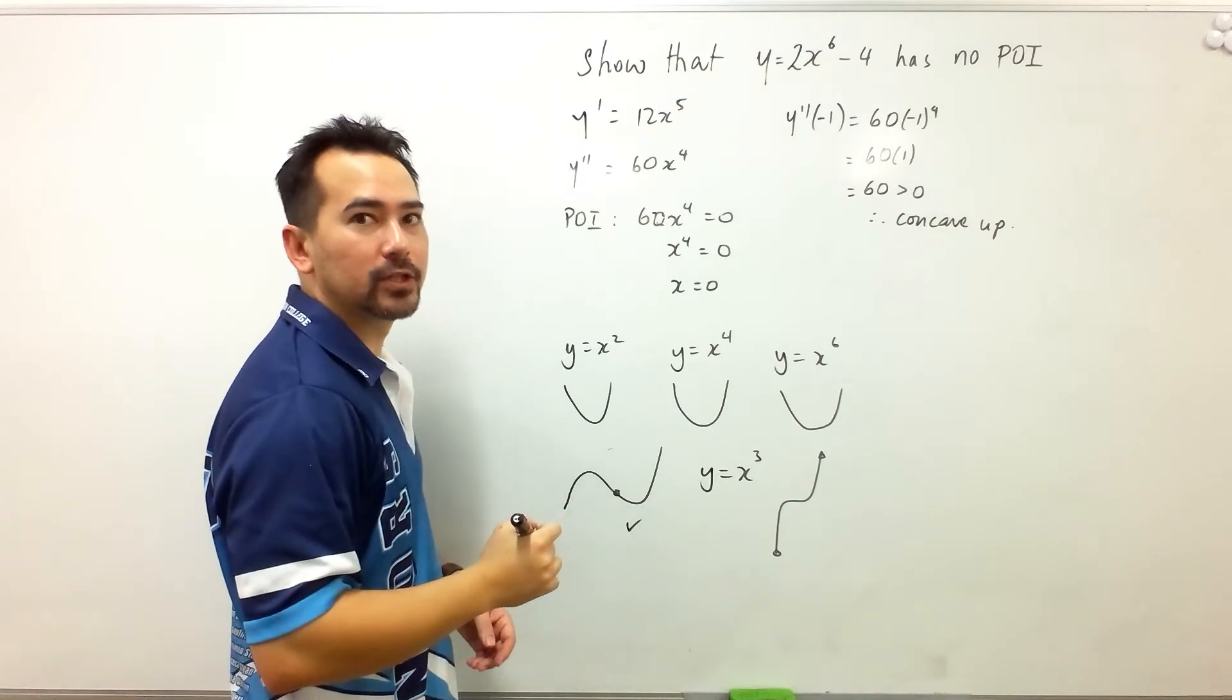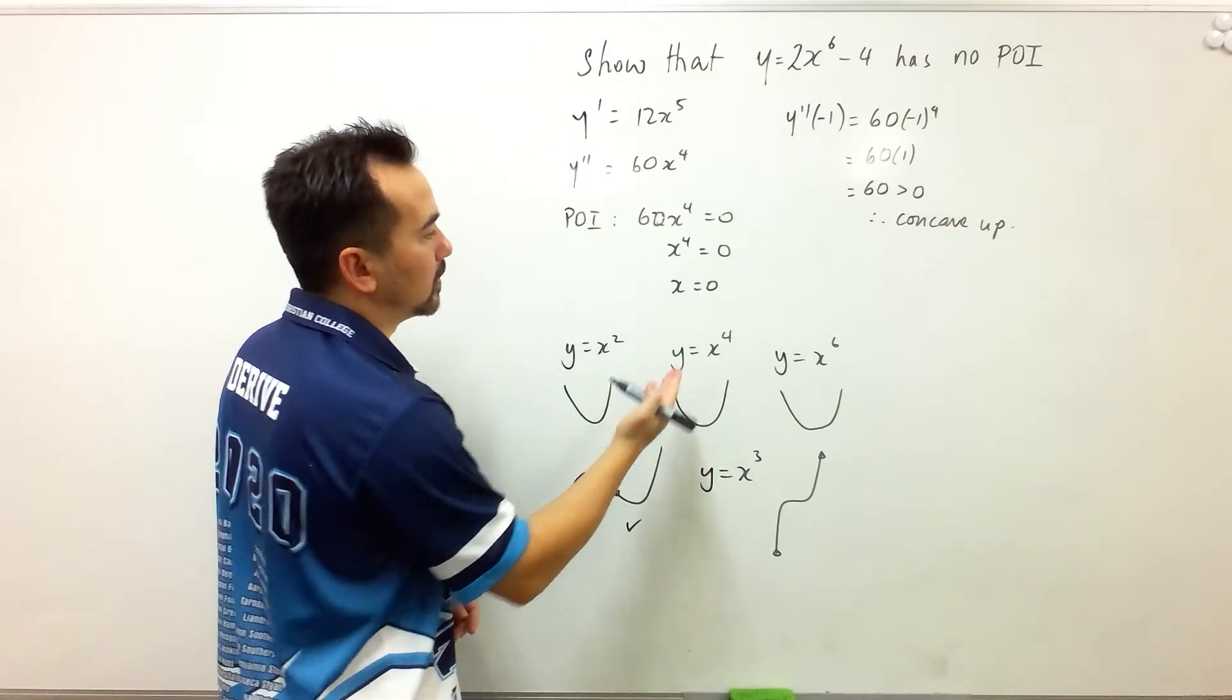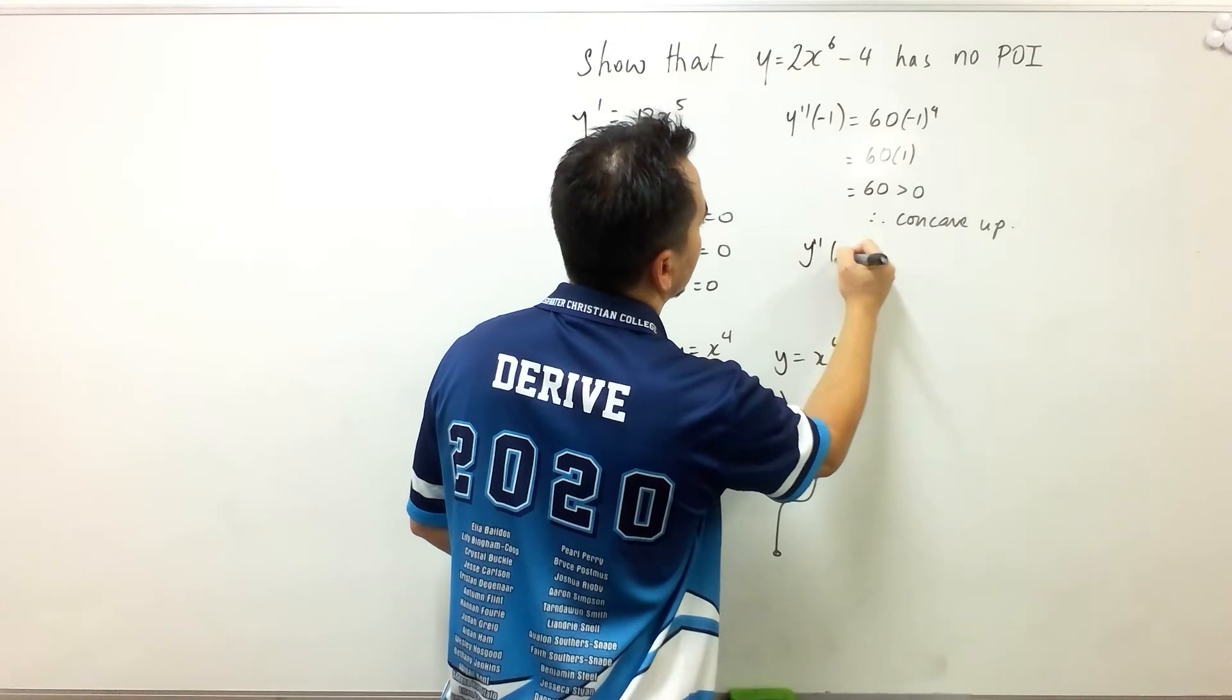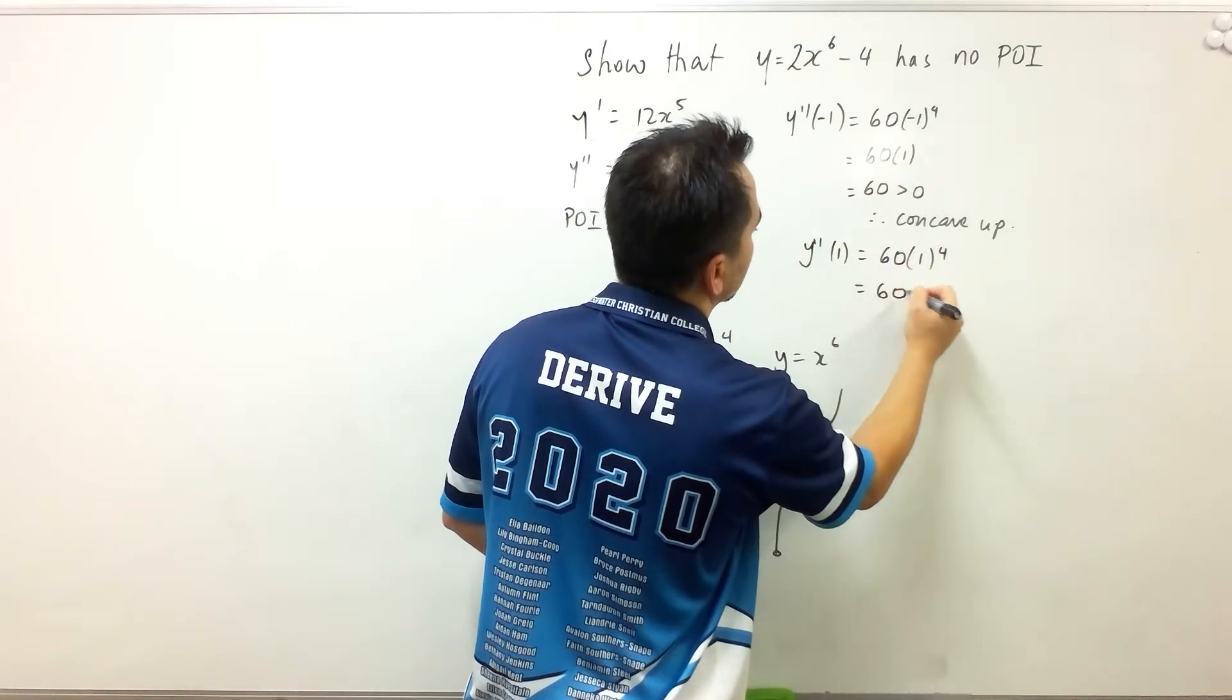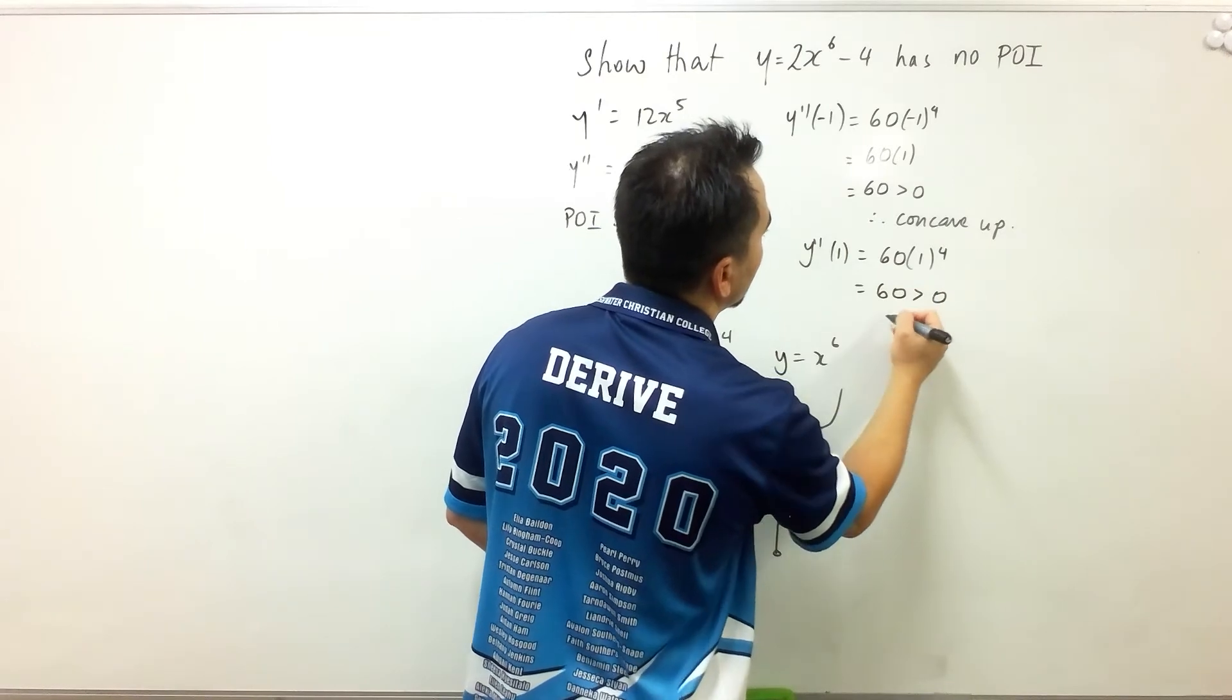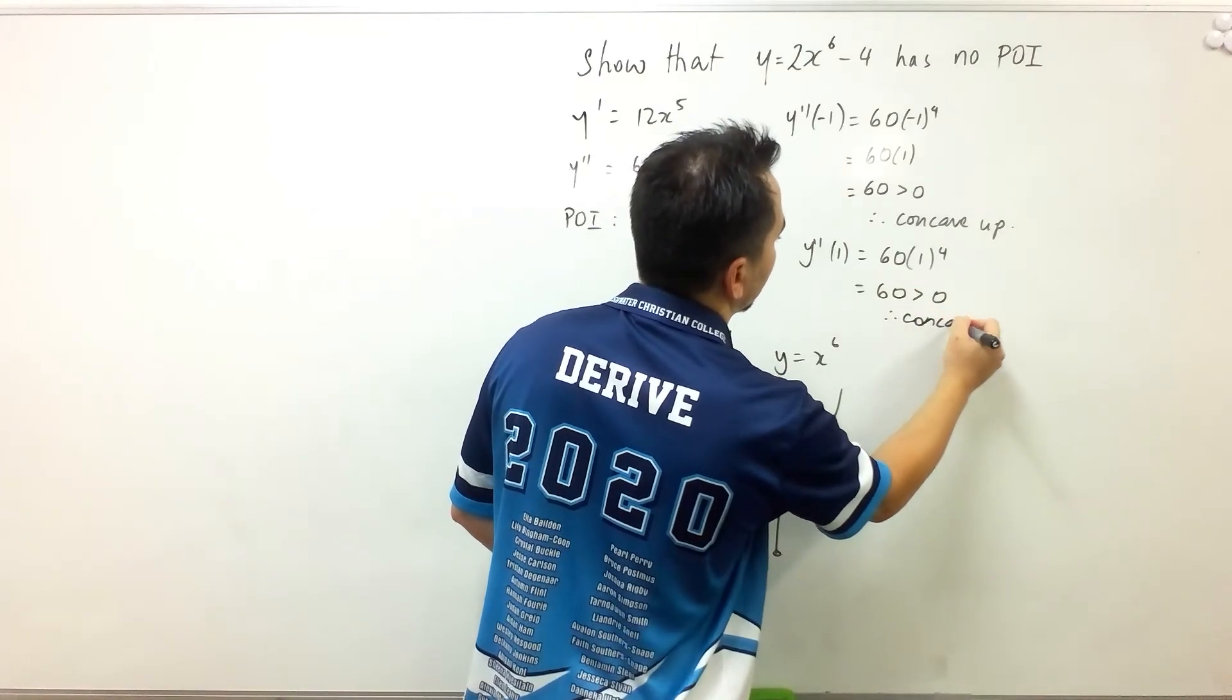And let's substitute positive 1. And we get 60 times 1 to the power 4, which is also 60, which is also greater than 0, which is also concave up.